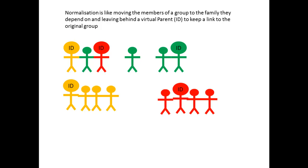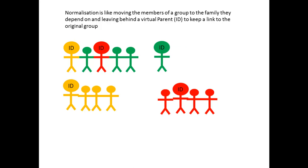We group what's left — only the greens from the original family — and group them all together. With that animation you can have a first idea of what we're doing when we're normalizing.